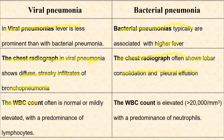WBC count is often normal or mildly elevated in viral pneumonia with a predominance of lymphocytes, whereas in bacterial pneumonia the WBC count is elevated, more than 20,000, with a predominance of neutrophils.